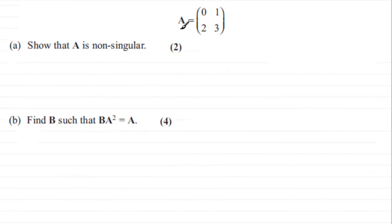Hi. Now here we have the matrix A which is equal to [[0, 1], [2, 3]], and we've got to show that A is non-singular. Then in the next part we've got to find a matrix B such that B times A squared equals A.